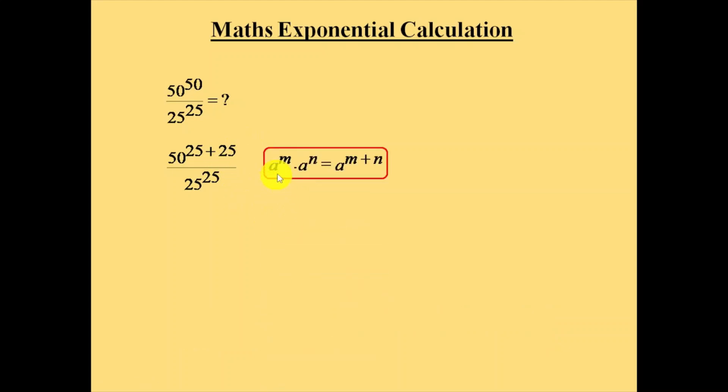We have a formula: a power m times a power n is equal to a power m plus n. If we consider this 50 as a and 25 plus 25 as m plus n, we can write this 50 to the power of 25 plus 25 as 50 power 25 times 50 power 25.